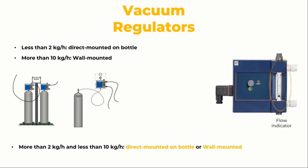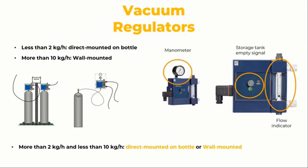The additional equipment has a flow indicator that shows the mass flow of chlorine gas and a storage tank empty indication. To accommodate different needs, manufacturers also provide additional accessories including adjustment valves, manometers, and electrical status indications. This guarantees accurate metering and exact configuration.